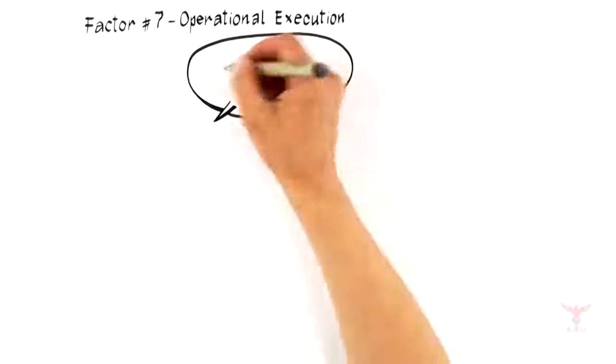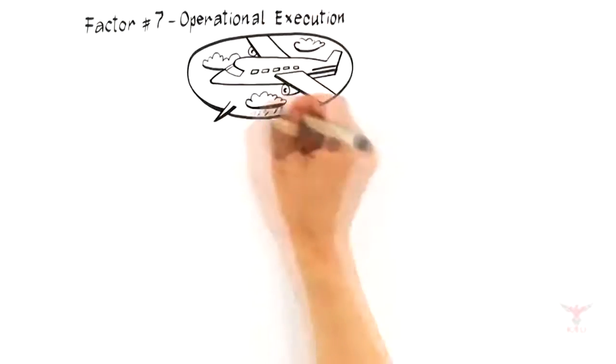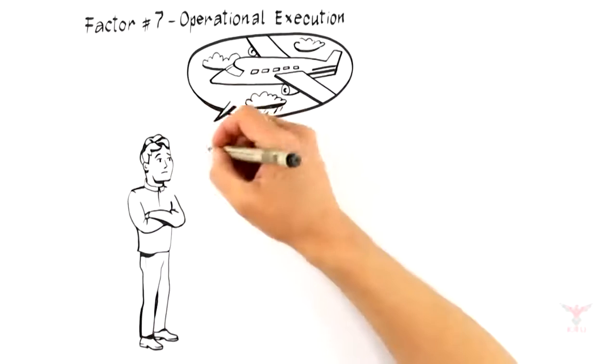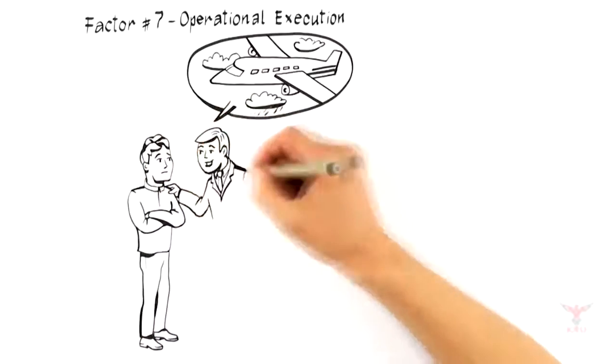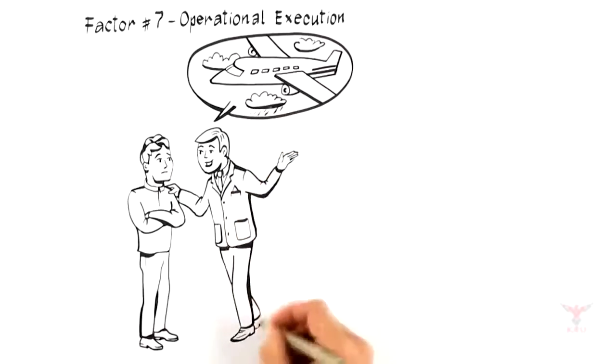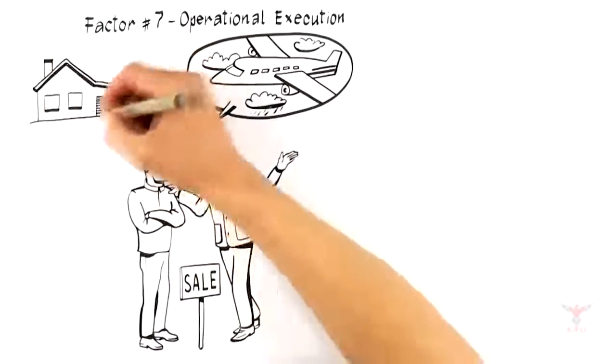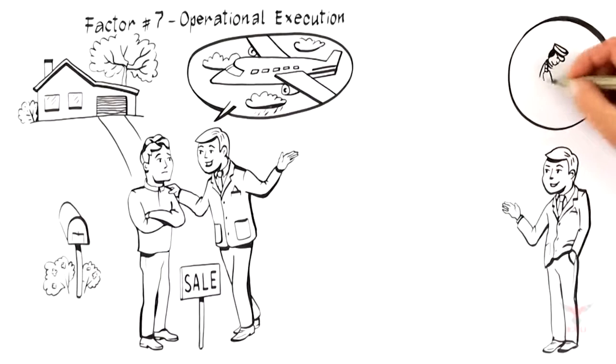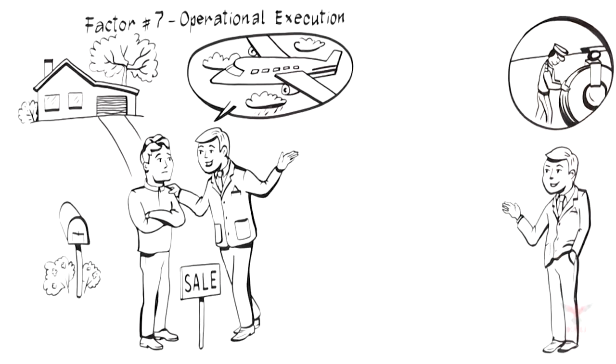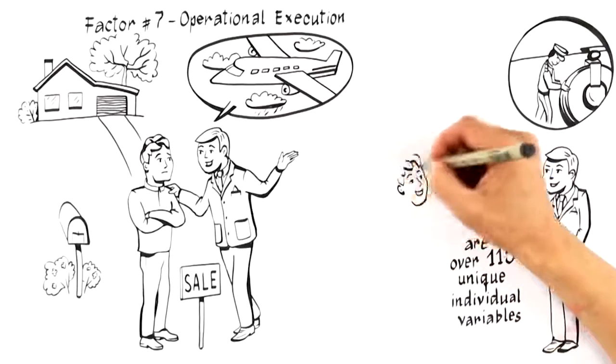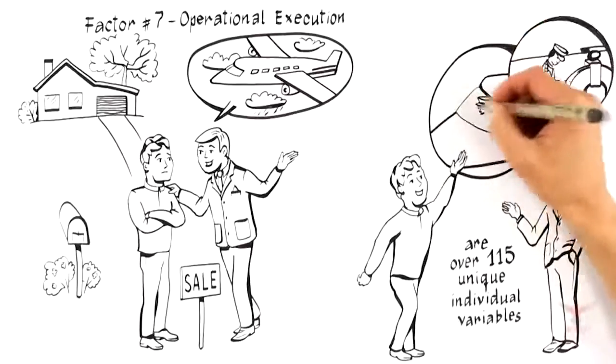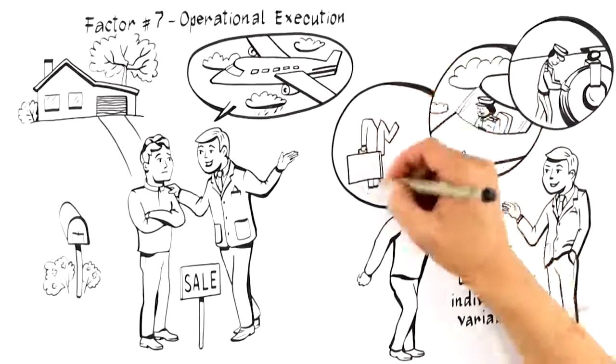The last factor that brings everything together is factor number seven: operational execution. The sale of your home is much like flying in an airplane. You want an expert in the cockpit who's flown hundreds of times and follows a set of documented processes to get your plane safely into the air and back on the ground again. You would never want your pilot to be the person who is checking the air in the tires, fueling the plane, washing the windows, or serving drinks up and down the aisle. And because there are over 115 unique individual variables that go into the successful sale of every home, you don't want an agent who doesn't have systems and relationships in place to manage the process. Like a safe flight, it takes many people working together to get your home sold for top dollar.